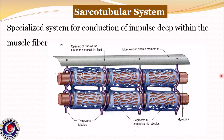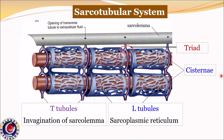The last part in the structure of muscle is the sarcotubular system — a specialized system for conduction of impulses deep within the muscle fiber. It includes T-tubules or transverse tubules, which are invaginations of the sarcolemma; L-tubules or longitudinal tubules, which are the tubules of the sarcoplasmic reticulum; and cisternae, which are the dilated terminal parts of the sarcoplasmic reticulum. T-tubules are closely associated with cisternae on either side, and these three structures together form triads. In skeletal muscle, the triads are present at the junction of the A and I bands, and hence there are two triads per sarcomere.